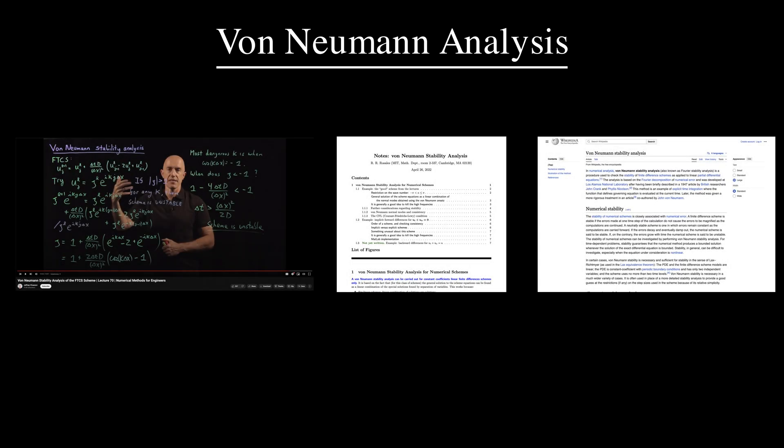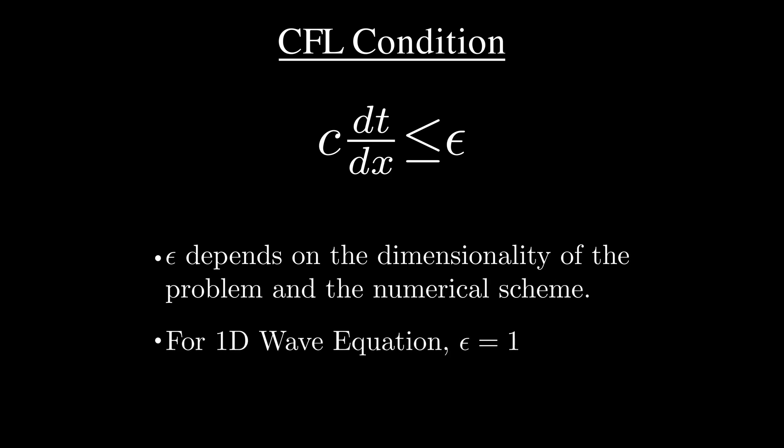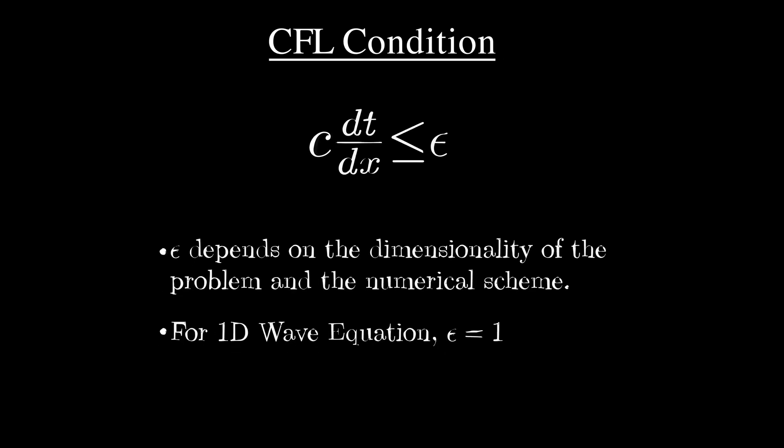Again, I am not going to cover the complete analysis and to be fair, there are already some excellent resources available online. So, the result from the von Neumann analysis is known as a CFL condition and it relates the grid spacing dx and dt with the medium velocity. Epsilon depends on the dimensionality and the numerical scheme. In this case, it is equal to 1.